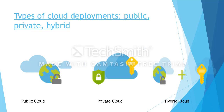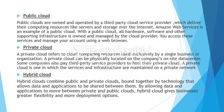This slide talks about types of cloud deployments. We have three models: private cloud, public cloud, and hybrid cloud. Public clouds are owned and operated by third-party cloud service providers, which deliver computing resources like servers and storage over the internet. Amazon Web Services is an example of a public cloud. With a public cloud, all hardware, software, and supporting infrastructure is owned and managed by the cloud provider. You access these services and manage your account using a web browser.